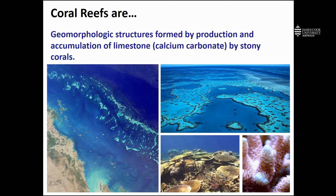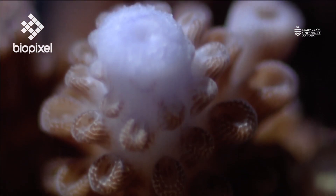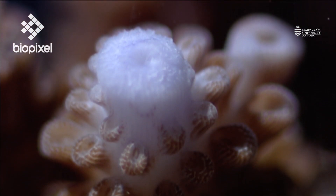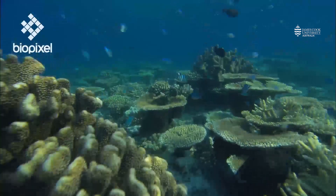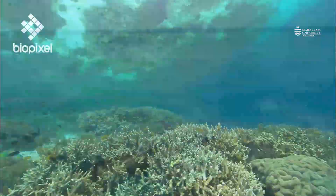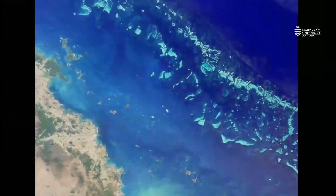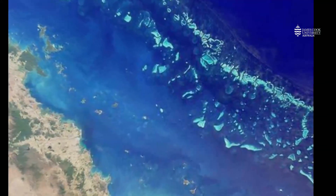Coral reefs more specifically are geomorphological structures formed by the production and accumulation of limestone, or calcium carbonate, by stony corals. We'll talk more about what corals are and how they build reefs in later sections, but you can see here an image of a branching coral, an Acropora. These corals form communities of mixed coral species, which form larger coral reefs — and composites of reefs form these large geological structures that are actually visible from space, from satellites.